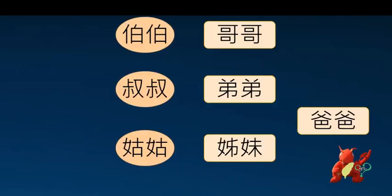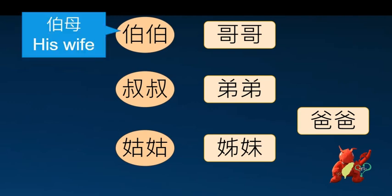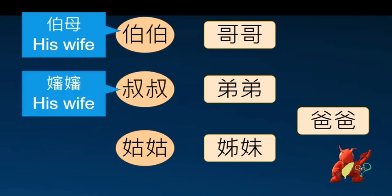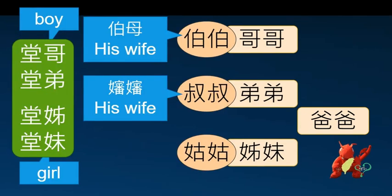My father's brothers who are older than him are my 伯伯, and his younger brother is my 叔叔. 伯伯's wife is called 伯母, but 叔叔's wife is called 嬸嬸. Their children are my 堂 siblings because we have the same family name: 堂哥, 堂弟, 堂姐, 堂妹.